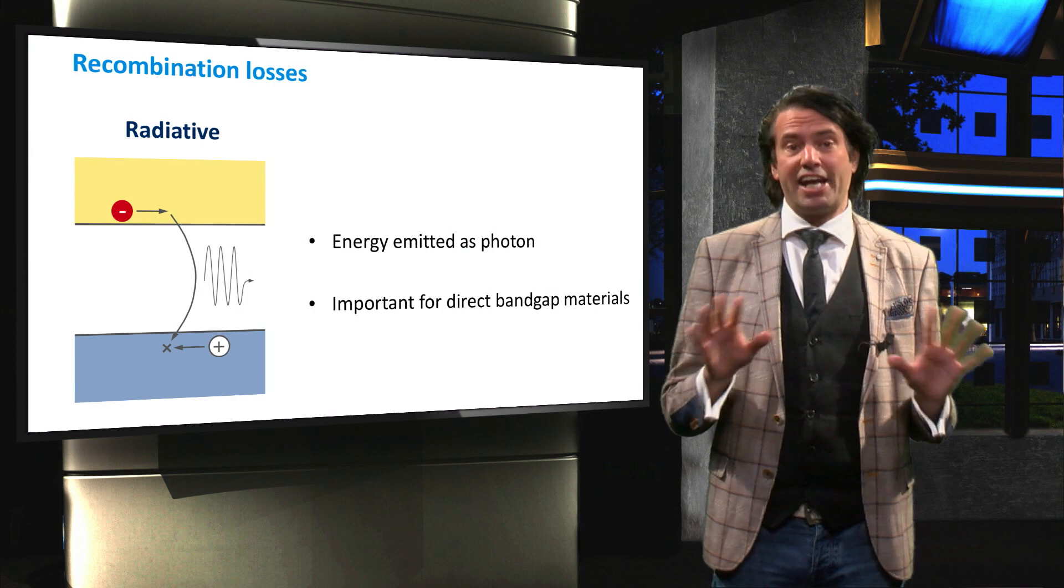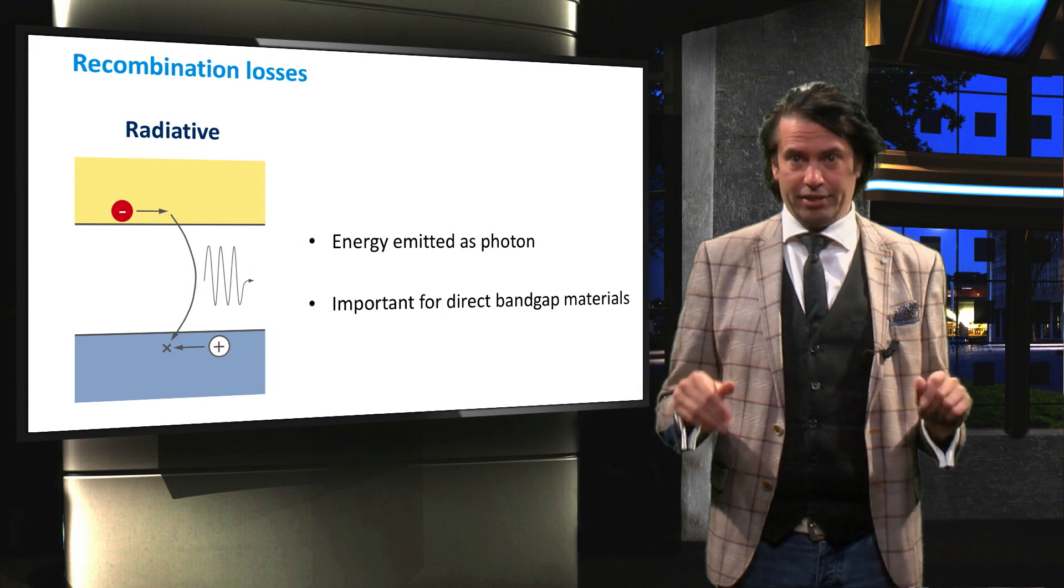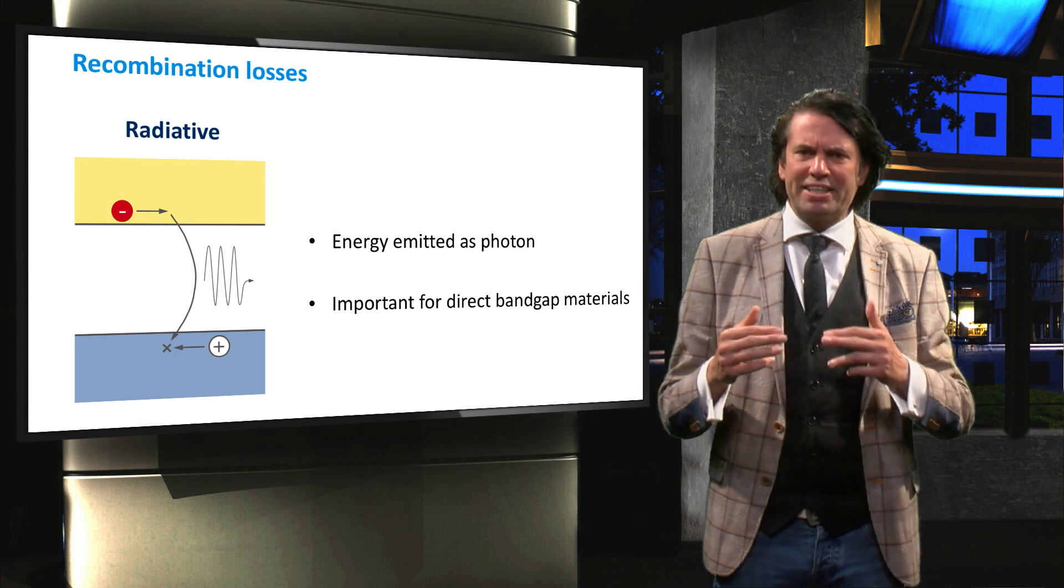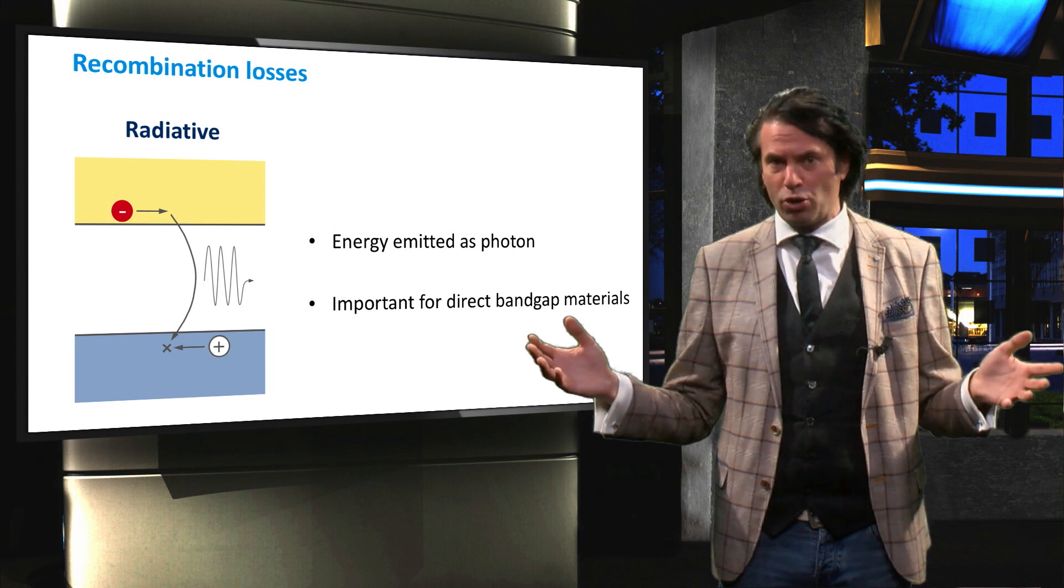The first type is radiative recombination. In radiative recombination, the energy of the electron is emitted as a photon after recombination.